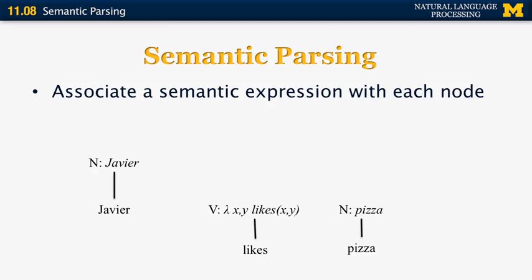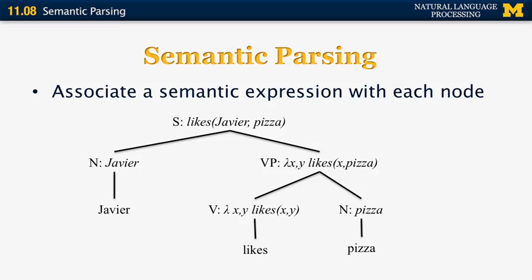Lambda expressions come in handy here. The verb 'likes' is represented as a lambda expression with two arguments, x and y, that produces the predicate likes(x, y). Combining this with the node for 'pizza' turns the two-argument lambda into a single-argument lambda expression, binding y to pizza. Combining the remaining lambda expression with 'Javier' applies the unbound variable to Javier, yielding the predicate likes(Javier, pizza).